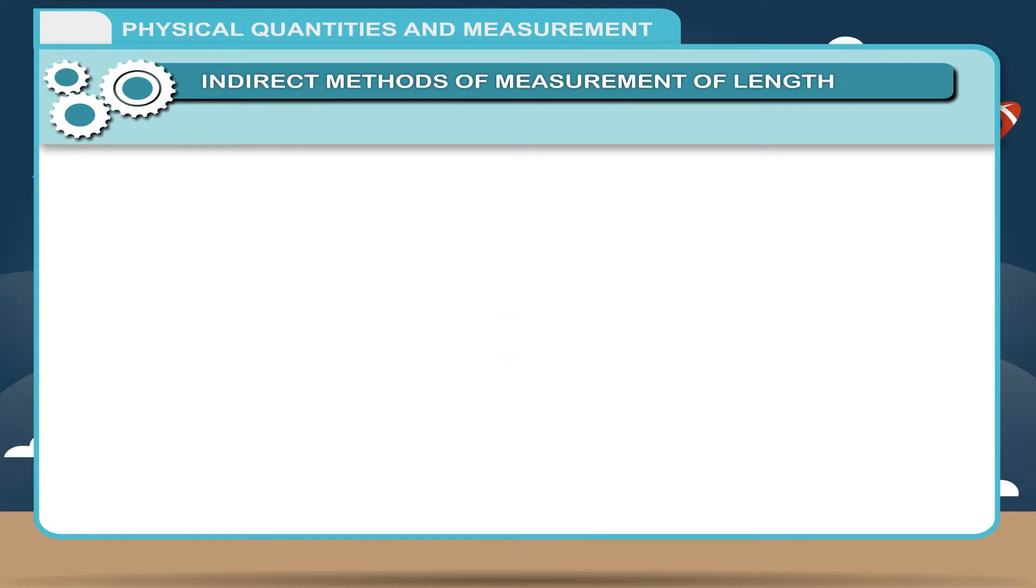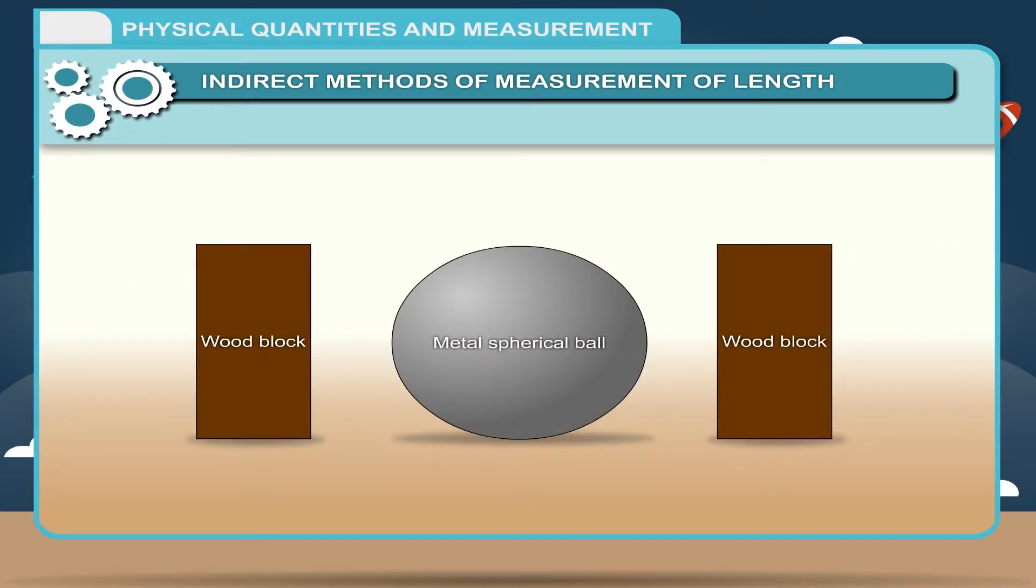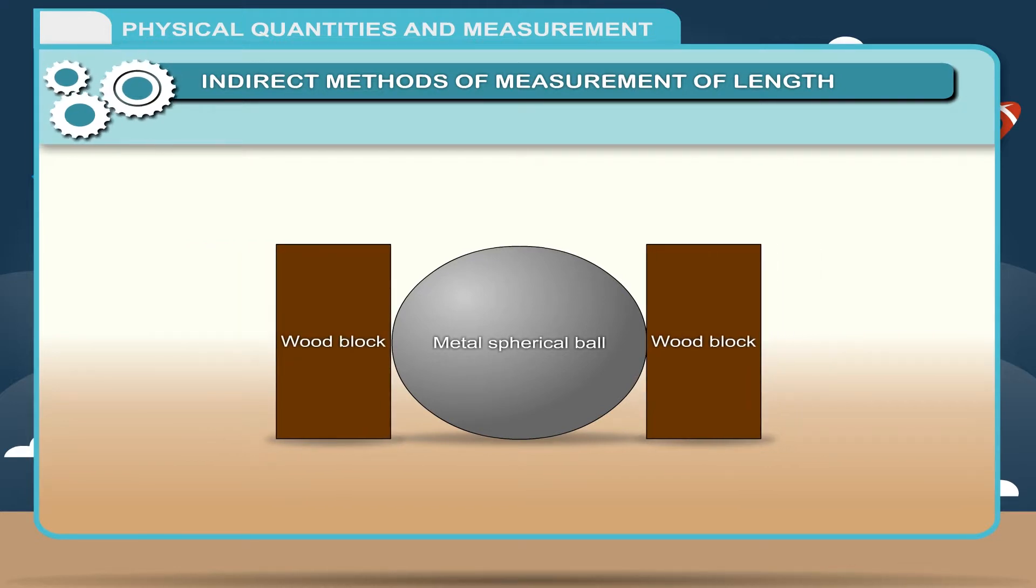Activity: To measure the diameter of a circular or spherical object, take a metal spherical ball and two wooden blocks. Place the spherical ball between two blocks. Mark the point of contact of sphere with the blocks.